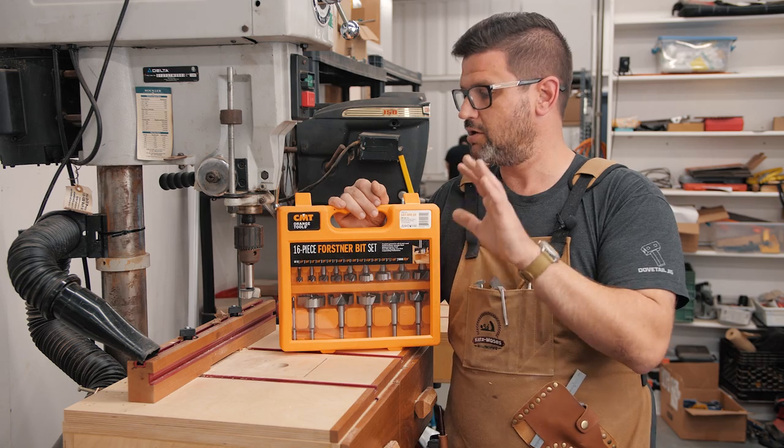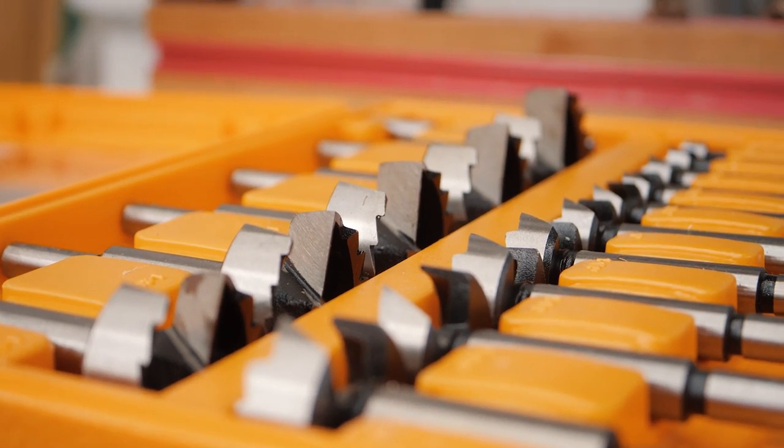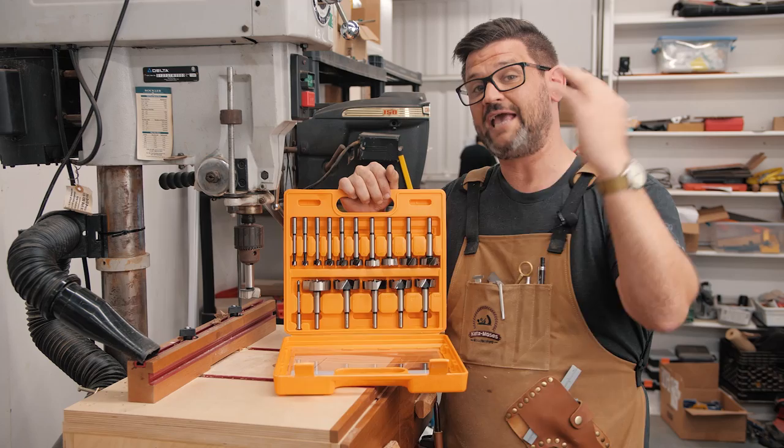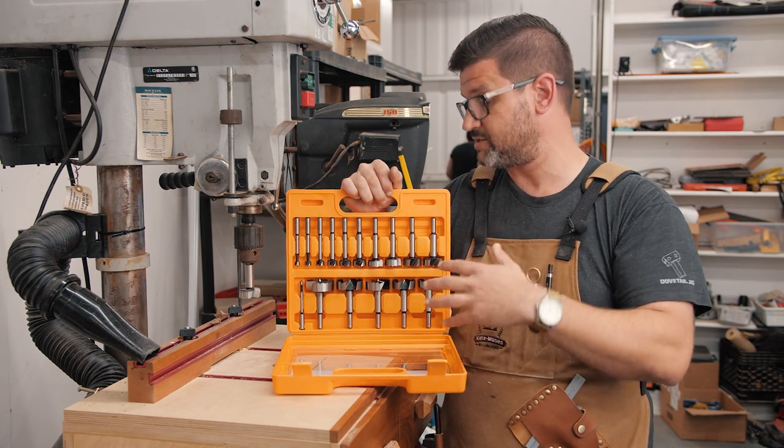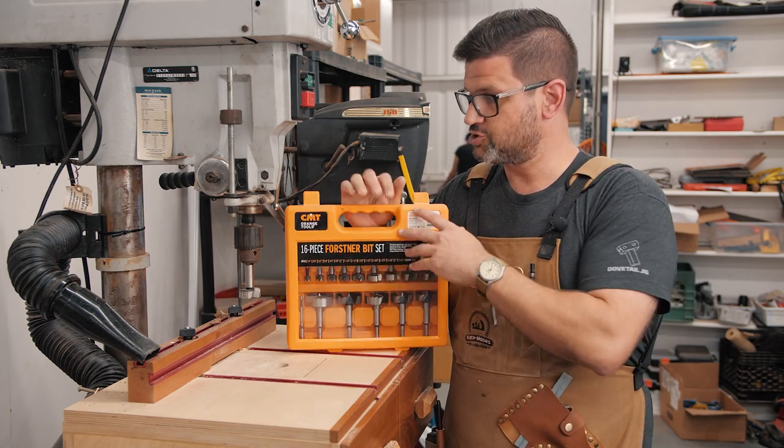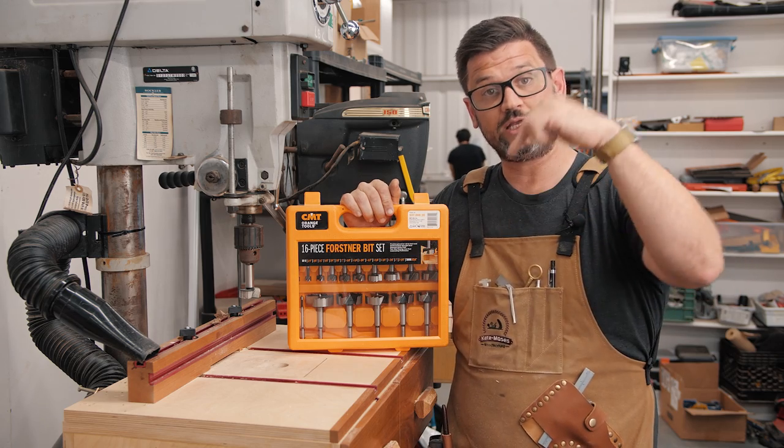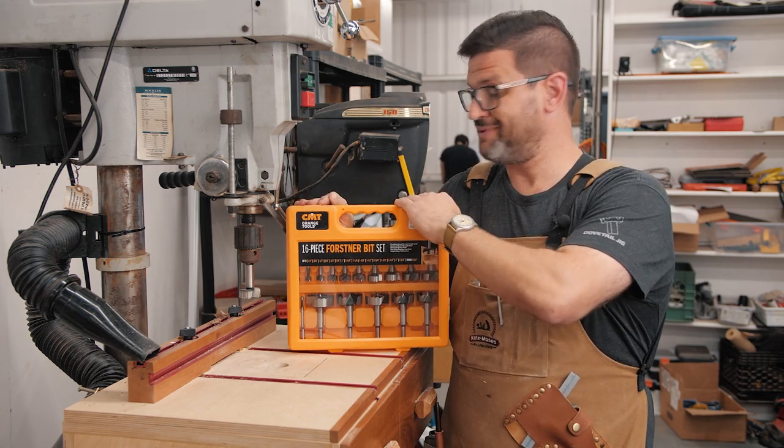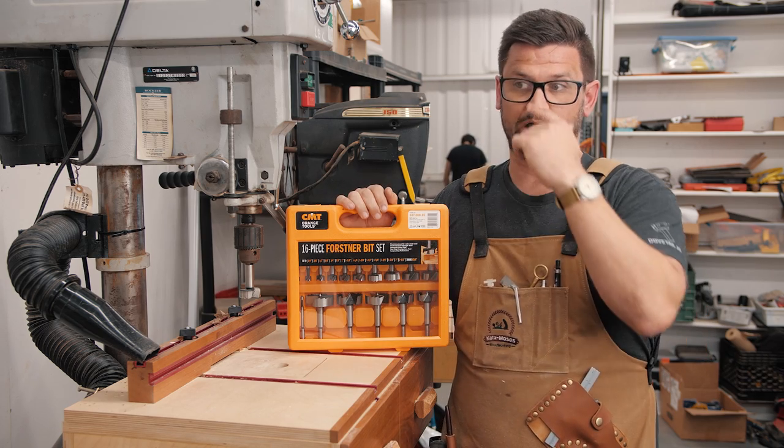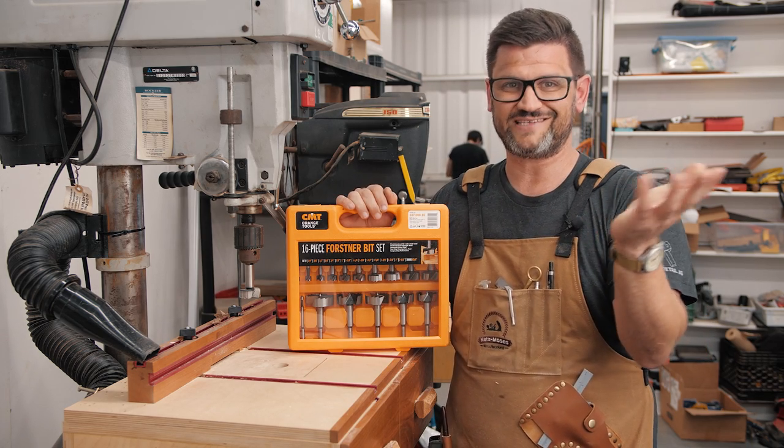They stay sharp forever. They have a 16-piece set, and they're offering Katz Moses viewers another $25 off, so it's only $96 or $6 a bit. They also have them individually. If you follow that link over to Taytools and use the discount code down below, you can pick these up, and it's a screaming deal. And don't wait, because you know we always sell Taytools out of stuff. Mike, you owe me a steak dinner, by the way.